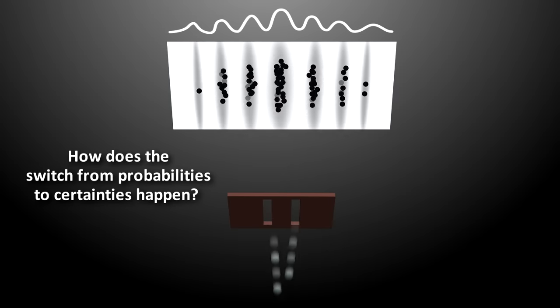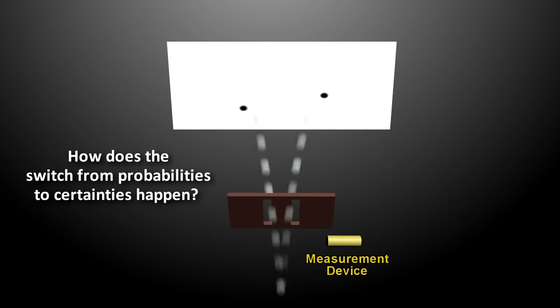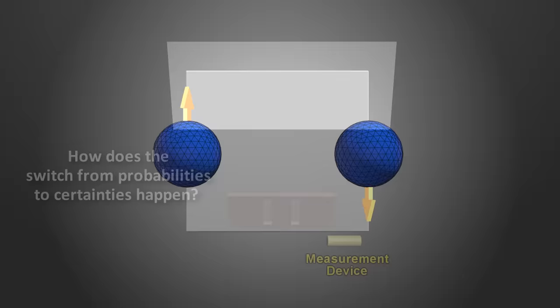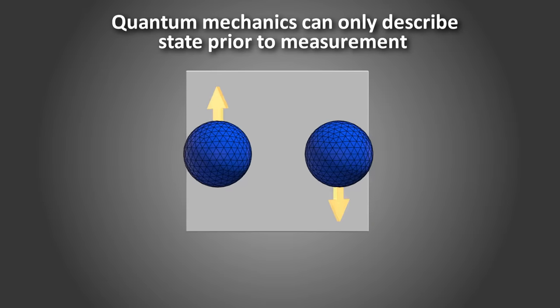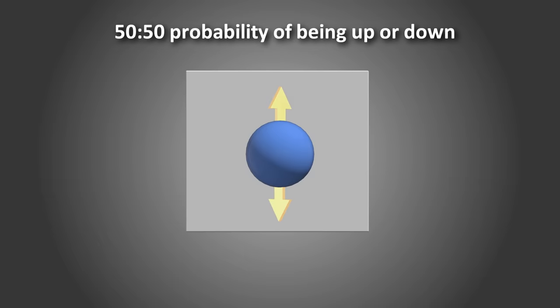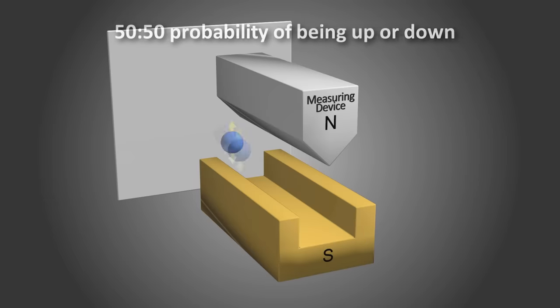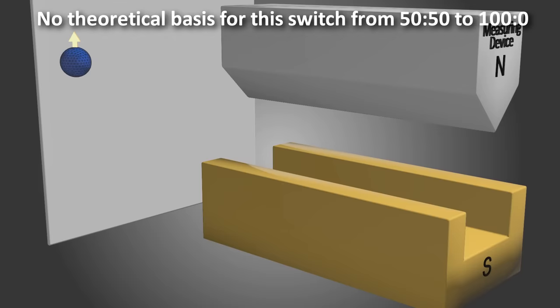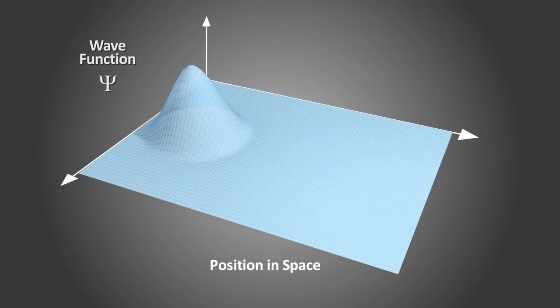Quantum theory doesn't tell us how the switch from probabilities to certainties happens. All quantum mechanics can do is describe the particle before we do the measurement, when the chances of being spin up or spin down are say 50-50, or some other set of probabilities. According to quantum mechanics, there's no way a particle's wave function can abruptly switch from the 50-50 probabilities to the 100% certainty we get when we make the measurement. There's no theoretical basis for this switch. So quantum physicists have to add in that step by hand, as something extra to quantum mechanics itself.